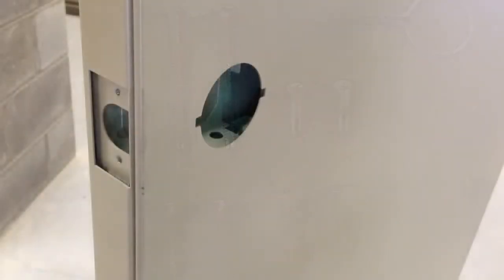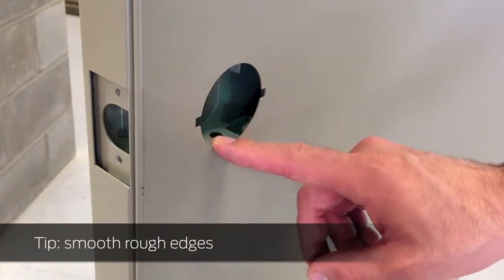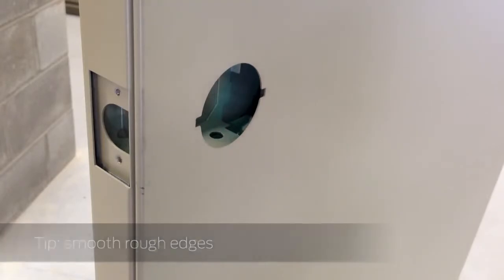Smooth any rough edges so the chassis will sit flush to the door, making sure not to enlarge the hole as the roses are the same size.